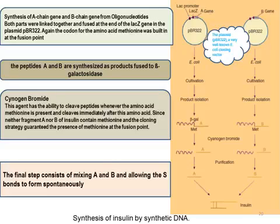In the process of insulin production, two vectors are used for the A and B chains, because there are two genes encoding insulin. The A chain consists of 21 amino acids and the B chain consists of 30 amino acids, held together by disulfide bonds. Both the A chain gene and the B chain gene are synthesized in the laboratory from oligonucleotides.